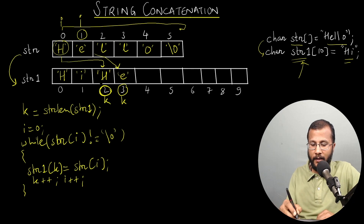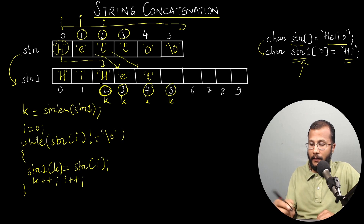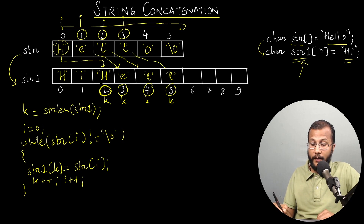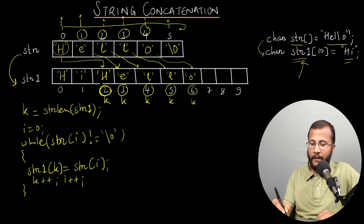Similarly, i is incremented to 2 and k to 4, so 'l' is copied at index 4. Then k becomes 5 and i becomes 3, so the next 'l' is copied. Then k becomes 6 and i becomes 4 — at index 4 there is 'o', which is copied to index 6 of str1. Then i is incremented to 5 and k becomes 7.